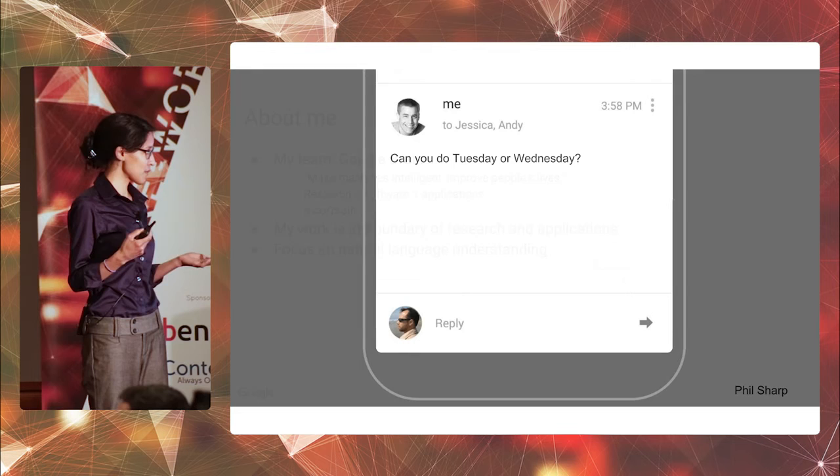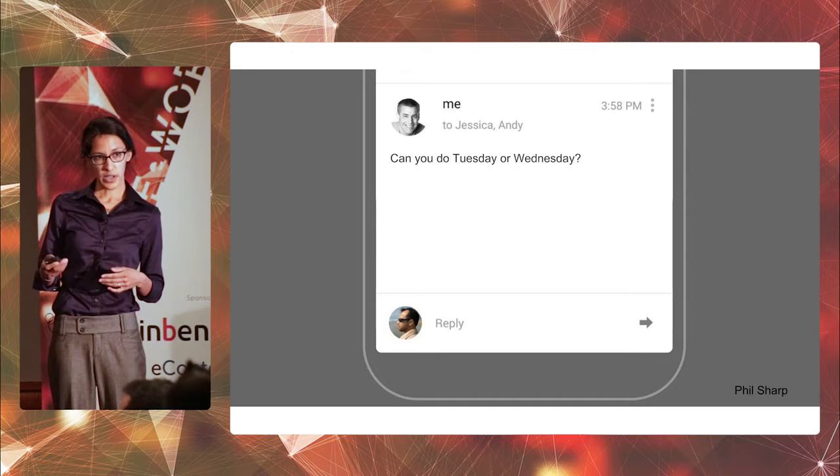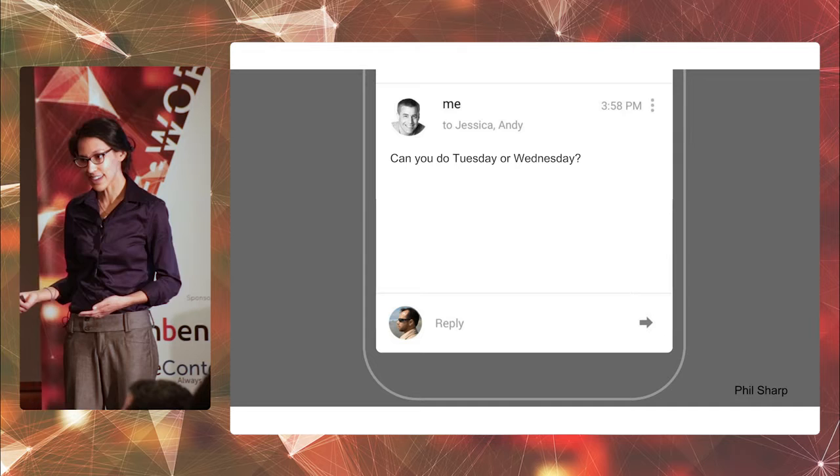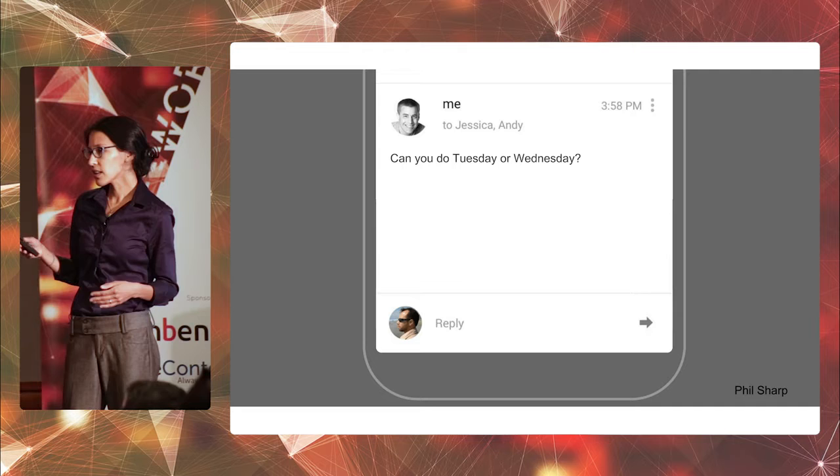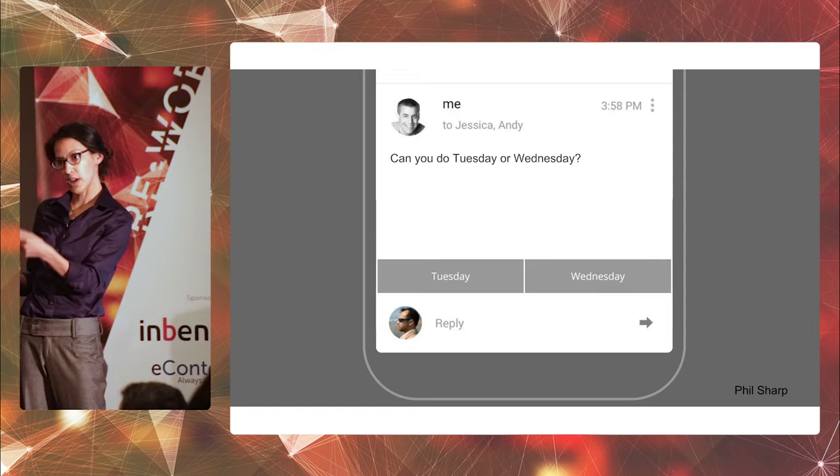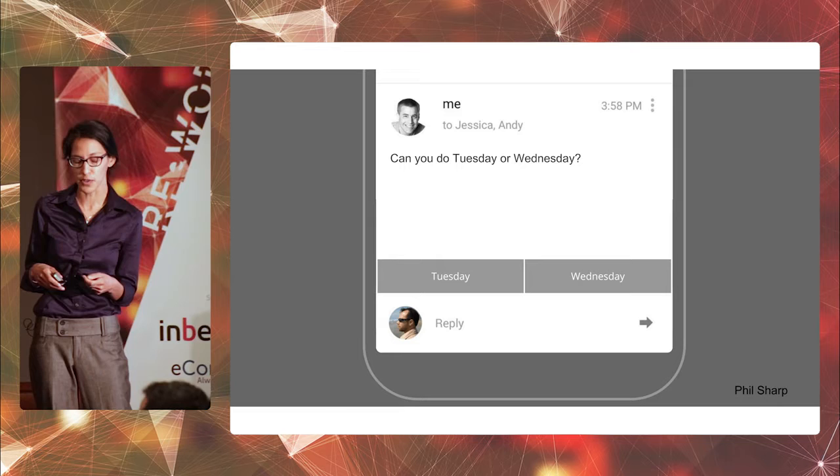So in case you haven't heard of Smart Reply, here's the intuition for the feature. The idea was, take a look at this email. It says, can you do Tuesday or Wednesday? Even though you didn't receive this email, you could probably think of a few plausible responses, right? Tuesday, Wednesday, neither one. So what happened was some Gmail engineers looked at this problem, and they said, if the words in the email can be used for us to predict a response, why can't the computer do that? We want to surface these responses Tuesday and Wednesday to the user. And the idea is that they could just tap one and then send it. It saves them some time and frustration of typing on their mobile phone.